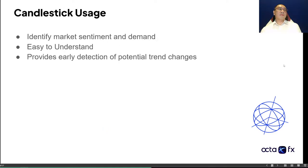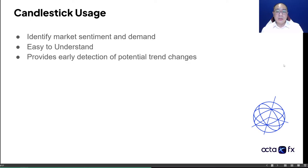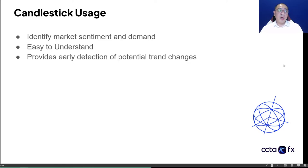What's the main purpose of a candlestick? It's basically used to identify market sentiment and also the demand in the market — whether we have increased demand, whether there are going to be buyers and sellers in the market. What is the sentiment? Is the sentiment bullish or is it bearish? That's what candlestick is for, especially the wick part, which we'll get into later on.